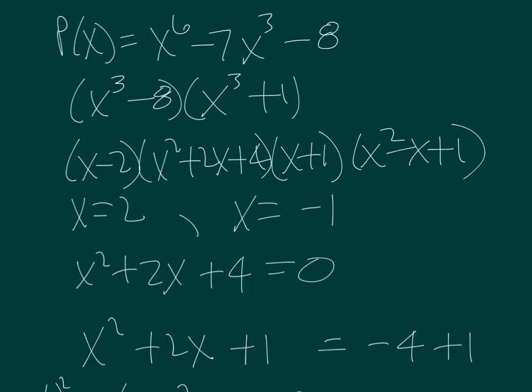We are to find the roots for the polynomial p of x equal to x to the sixth minus seven x cubed minus eight. This would factor into x cubed minus eight times x cubed plus one.